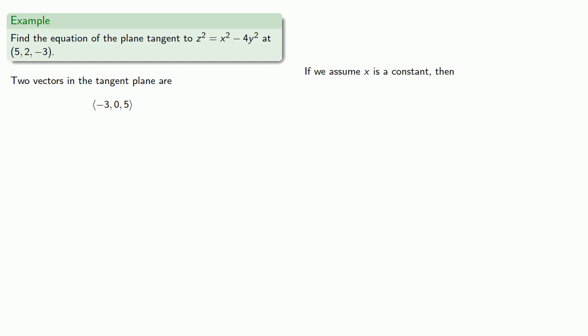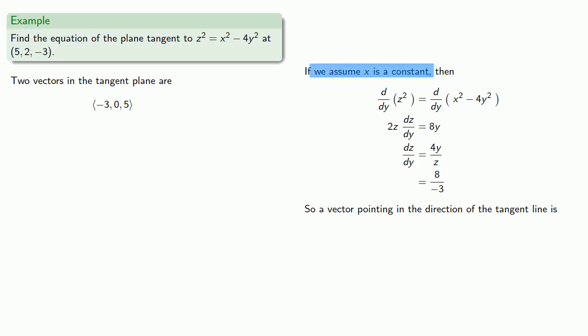Similarly, if we assume x is a constant, we can differentiate implicitly with respect to y and find dz/dy. And again, derivative is slope. Slope is rise over run, and so this derivative 8 divided by negative 3 corresponds to a vector pointing in the direction of the tangent line. X is constant, so the first component of the vector is 0. Our run is minus 3 which runs along the y-axis, so our second component is negative 3. And the rise is 8 along the z-axis, and so that will be our third component. So our second vector that is in the tangent plane is 0, negative 3, 8.